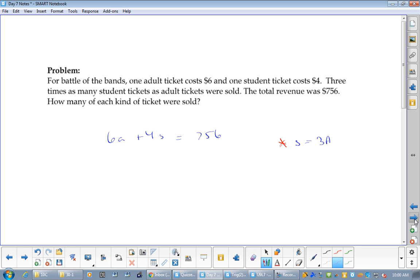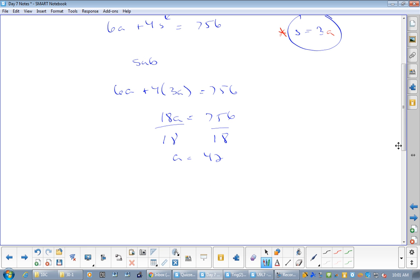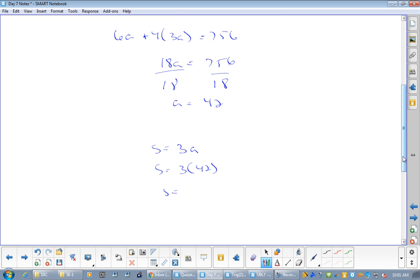Now, this one just screams, do what? Substitution. S equals 3A. So, then you would just go, we're going to sub. I'm going to take this and I'm going to put it into there. So, 6A plus 4 times 3A equals 756. 6A plus 12A is 18A equals 756 divided by 18. A equals 42. What do you think S is? S equals 3A. S equals 3 times 42. S equals 126. So, 42 adults. And this is where the sentence is super important. Because, do you really know what you got? 126 students.